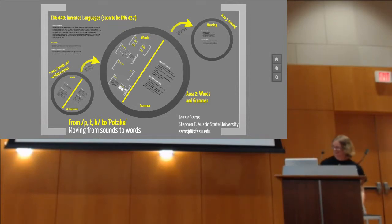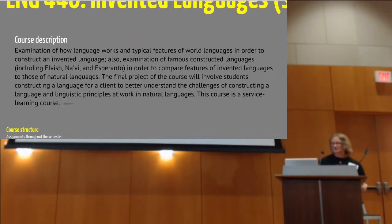So the course description as it is on the books is that it is an examination of how language works and typical features of languages in order to construct an invented language. It's also an examination of famous constructed languages, including Elvish, Navi, and Esperanto. And of course, soon to also include Dothraki and Kassadon. In order to compare features of invented languages to those of natural languages. And then for the final project, students write a mini grammar of their language.